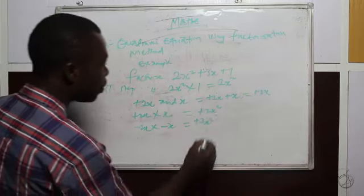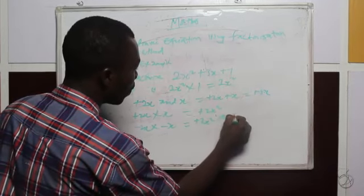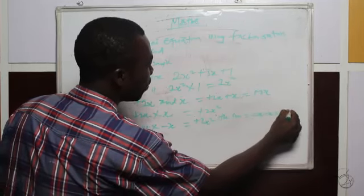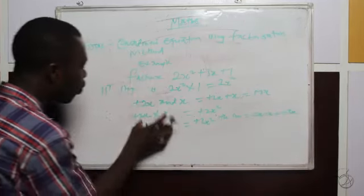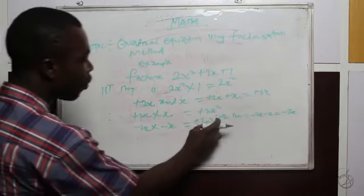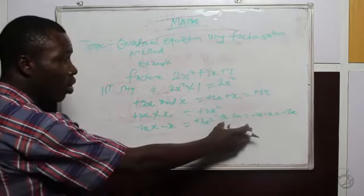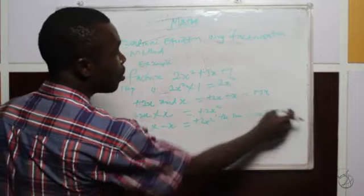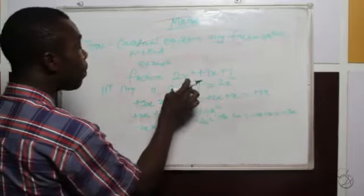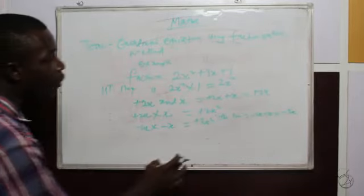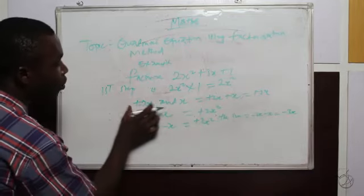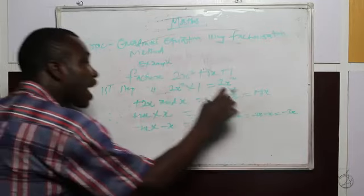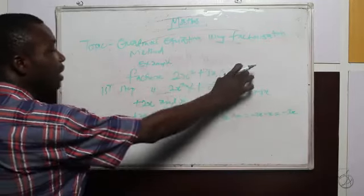But what about the sum of those other factors? The sum of minus 2x and minus x gives us minus 3x. Because these two factors give us +2x² in their product, but in their sum we have minus 2x minus x, which equals minus 3x. So it cannot replace +3x. Therefore, the factors +2x and x, whose sum is +2x + x = +3x, can replace +3x in this equation.